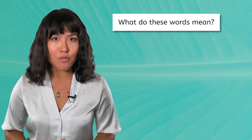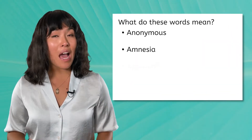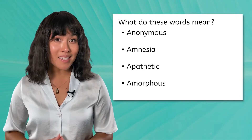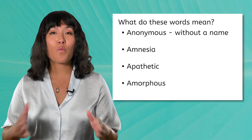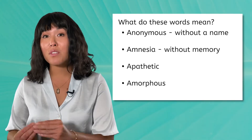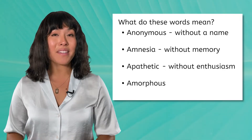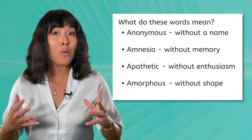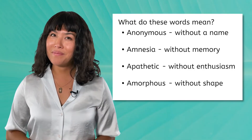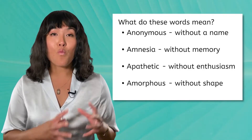I want you to think about this list of words: anonymous, amnesia, apathetic, amorphous. Do you know what these words mean? Anonymous means without a name. Amnesia means without memory. Apathetic means without enthusiasm. And amorphous means without shape. Do you notice a pattern? Each of the words start with the letter A.